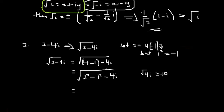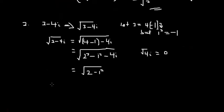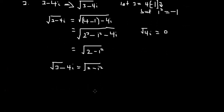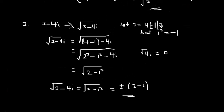When you take the root of 4i, the result goes to zero and we are left with 2 minus i². You can then further simplify this entire expression, which simplifies to plus or minus 2 minus i.